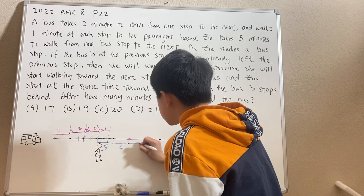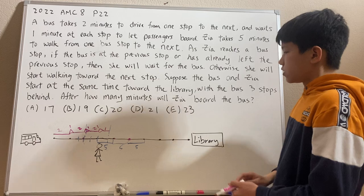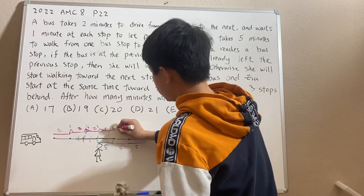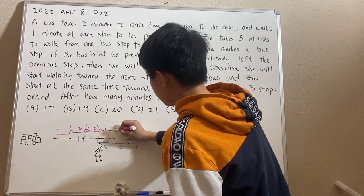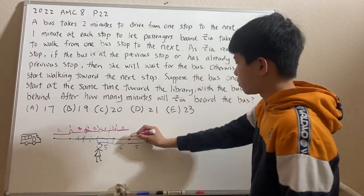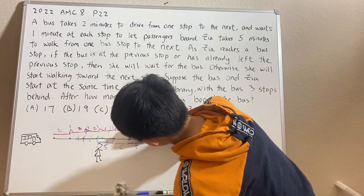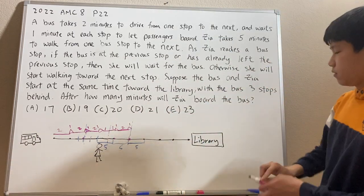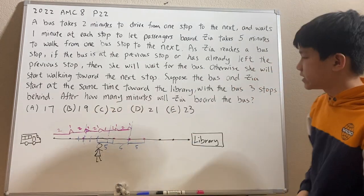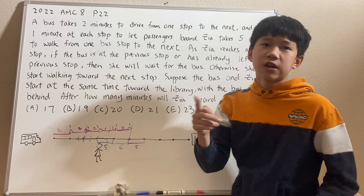We can see that the bus is very steadily catching up and it's going to be near Zia soon. Now the bus finishes its route to the stop, waits one minute, goes to the next stop, then waits another minute — exactly five more minutes. We draw a dash right here. Now we see the bus is actually right behind Zia — it's at the previous stop. So is the bus at the previous stop? Yes. This means Zia will wait.